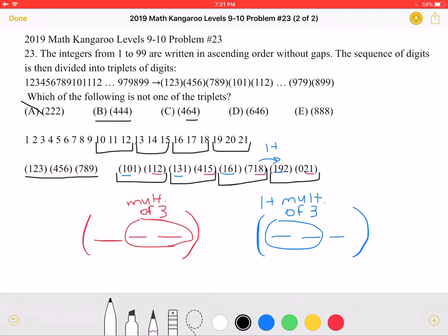64 is not a multiple of 3. However, 46 is 1 more than a multiple of 3. So answer choice C is an actual triplet, which means it's not the correct answer.